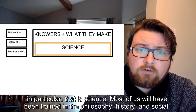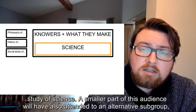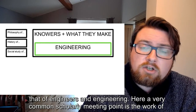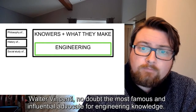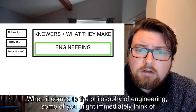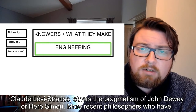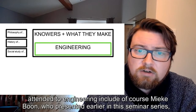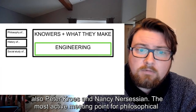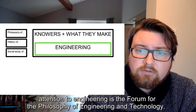Most of us will have been trained in the philosophy, history, and social study of science. A smaller part of this audience will have also attended to an alternative subgroup — that of engineers and engineering. Here a very common scholarly meeting point is the work of Walter Vincenti, no doubt the most famous and influential advocate for engineering knowledge. When it comes to the philosophy of engineering, some of you might immediately think of Claude Levi-Strauss, others the pragmatism of John Dewey or Herb Simon. More recent philosophers who have attended to engineering include Mika Boone, who presented earlier in this seminar series, also Peter Crows and Nancy Nersessian. The most active meeting point of philosophical attention to engineering is the Forum for the Philosophy of Engineering and Technology.